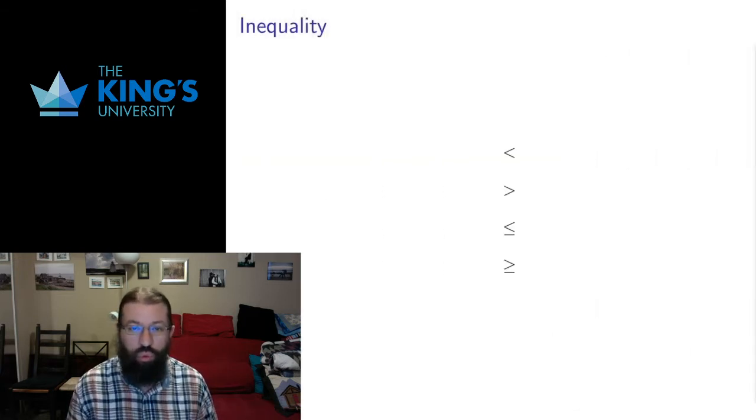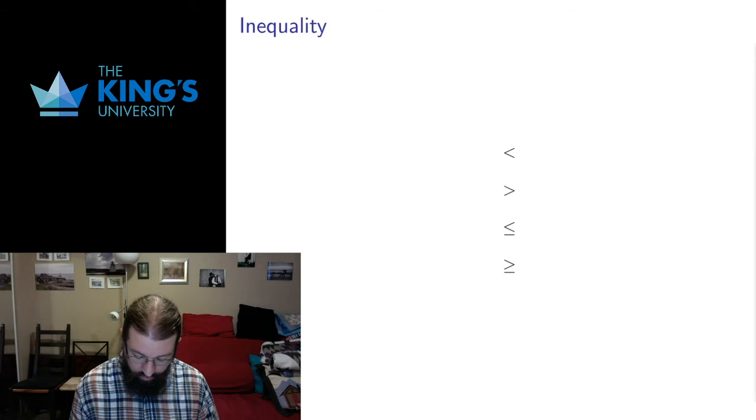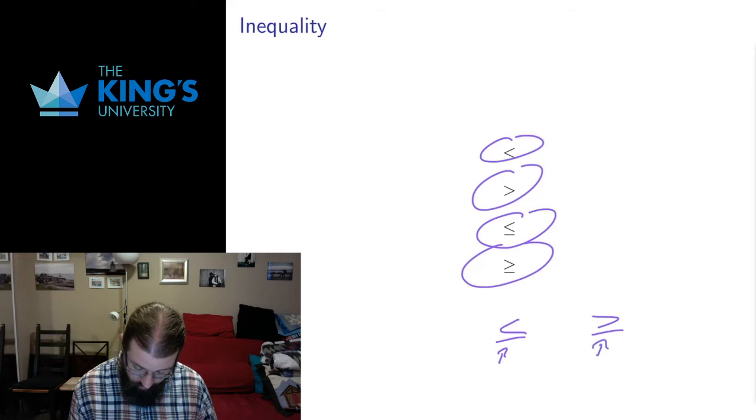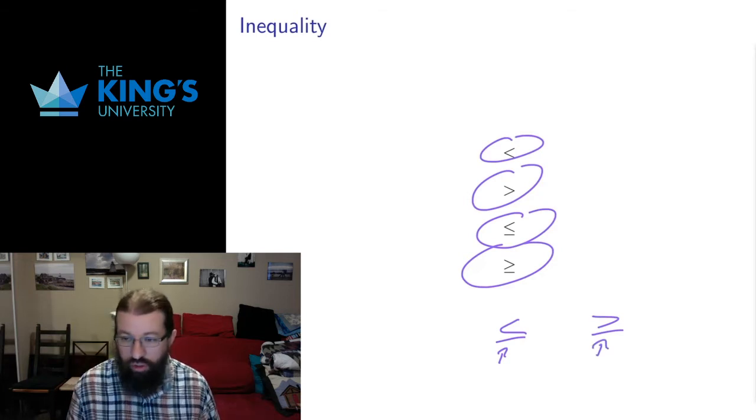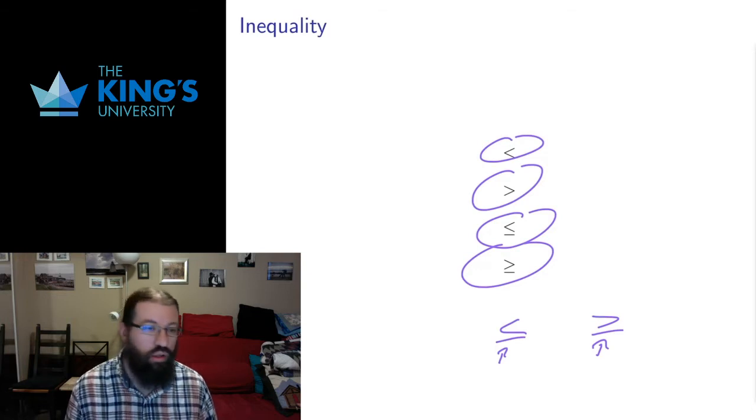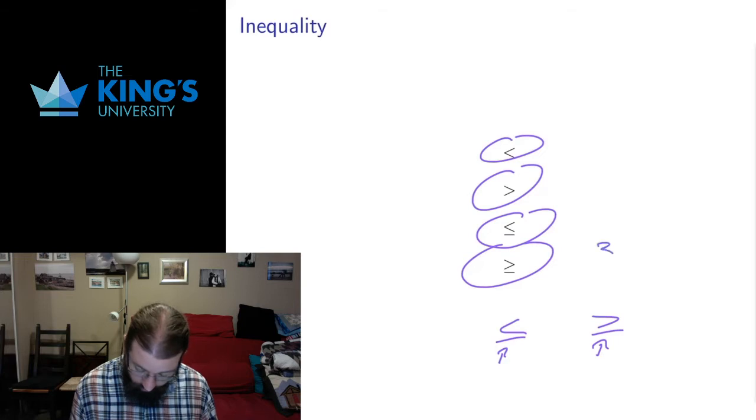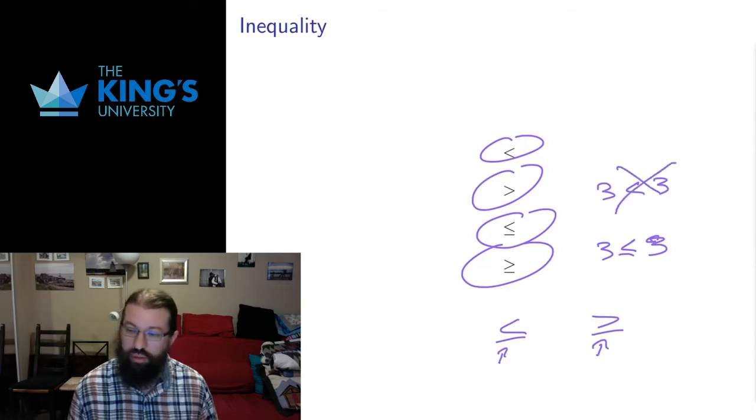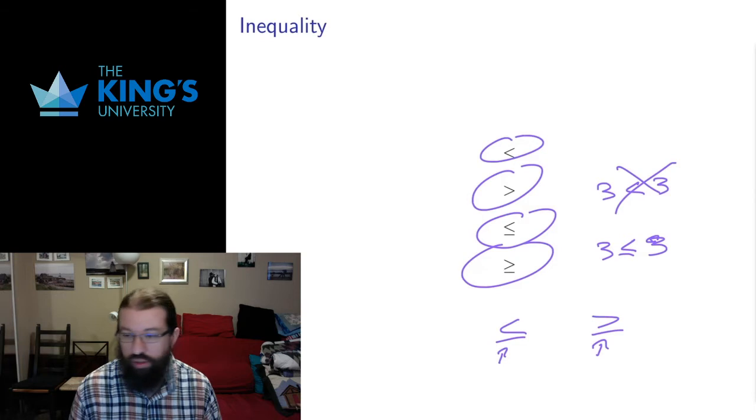So in mathematics we have four inequality relations. We have less than, greater than, less than or equal, and greater than or equal. This line below indicates the potential for equality. Without the line below we say that the inequality is strict and we do not allow for equality. So we can say something like 3 is less than or equal to 3, that's fine. We cannot say that 3 is less than 3, that doesn't work.